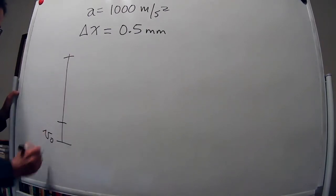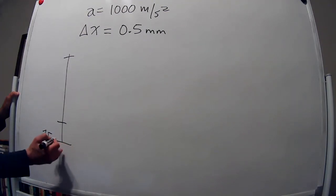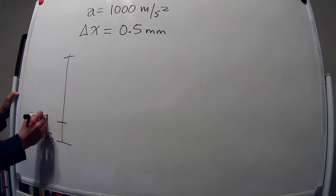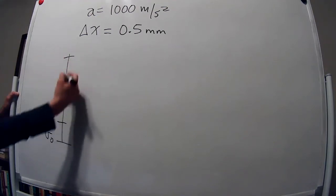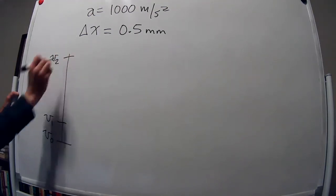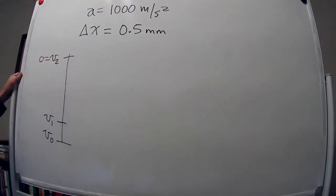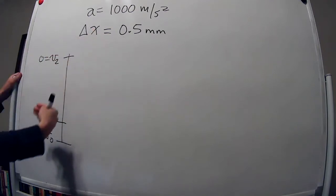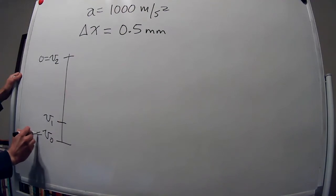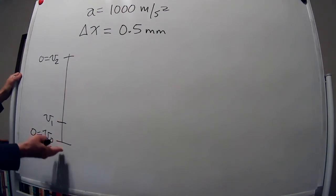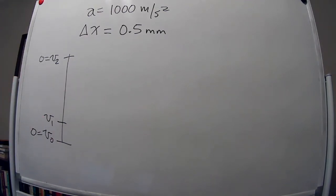Here's a diagram: the flea starts at the ground with initial velocity v0. Right after the accelerating phase it has velocity v1, and at the very top it has velocity v2. We know v2 equals zero because it's the highest point — in the next instant it starts going down. And v0 is also zero because it starts from rest. So v1 is the only velocity that is not zero.